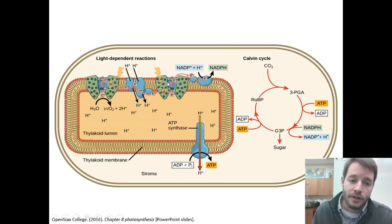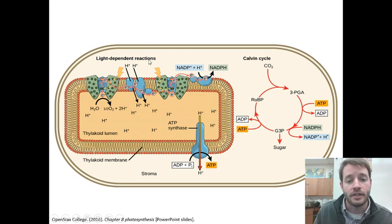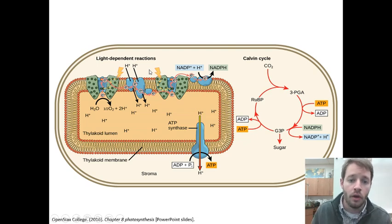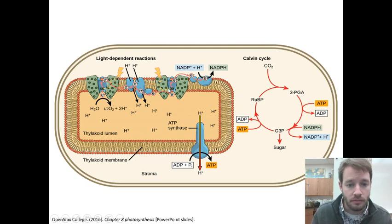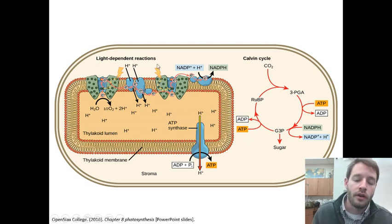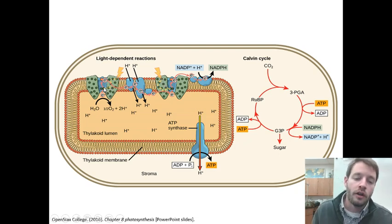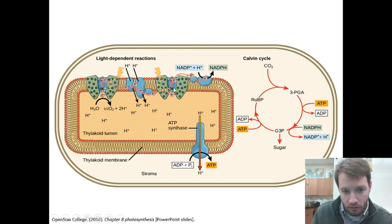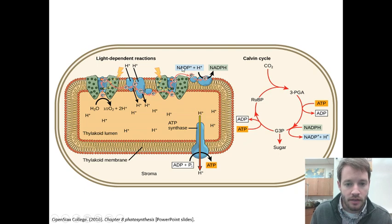Starting with the first half of photosynthesis — the light-dependent reactions — these are called the light-dependent reactions because they need sunlight to occur. The sunlight strikes the photosystems, which are specialized proteins embedded within the thylakoid membrane. When sunlight strikes those proteins, which have chlorophyll in them, the chlorophyll transfers electrons from water through an intricate pathway of proteins, ultimately linking a hydrogen ion to NADP+ to create NADPH, which functions as an electron carrier.